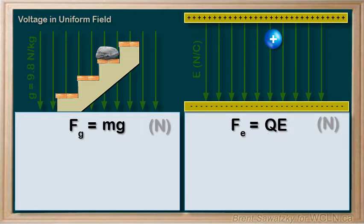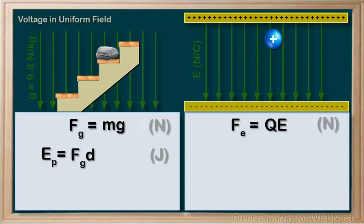Back to the staircase, let's consider the potential energy of a rock in joules. Potential energy here is the force of gravity times the displacement — the work to get it from the bottom to this stair. Since we're close to earth, we can replace Fg with mg, a nice uniform field. And since the work would be upward against gravity, we'll replace d with h for height: mgh.